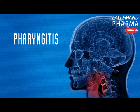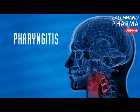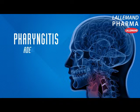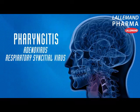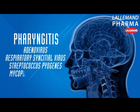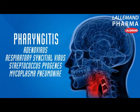Pharyngitis is often of viral origin, with some cases due to Group A Beta-Hemolytic Streptococcus. The main pathogens involved are Adenovirus, Respiratory syncytial virus, Streptococcus pyogenes, and Mycoplasma pneumoniae.